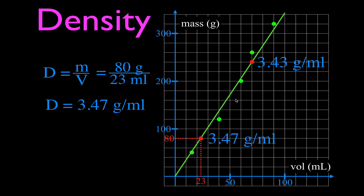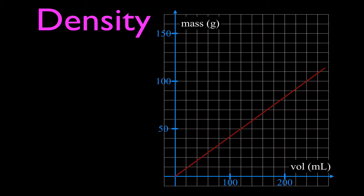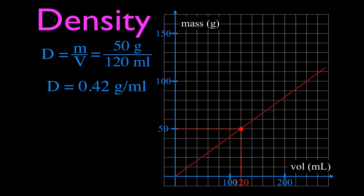So that's how we plot the data, draw the best fit line, and calculate the density. It could also be the case that you're given a line on a graph without the data points, and asked to calculate the density represented by that line. We have an infinite number of points along a line — each with a corresponding mass and volume — and we can use those points to calculate density. Choosing a point on the grid: volume is 50 and mass looks like 110 or 120. Using density equals mass divided by volume: 50 divided by 120 gives a density of 0.42 grams per milliliter.